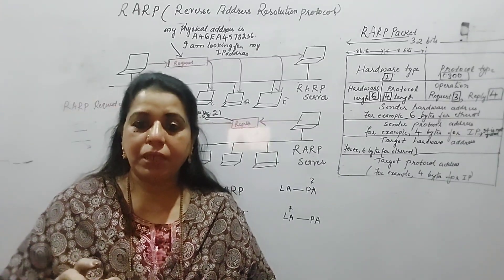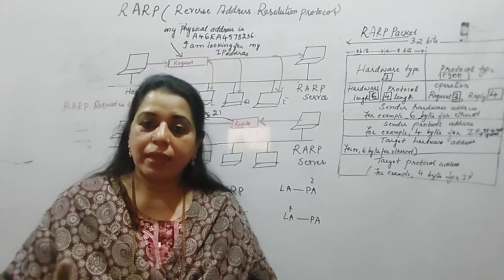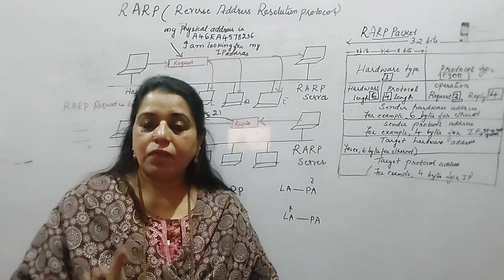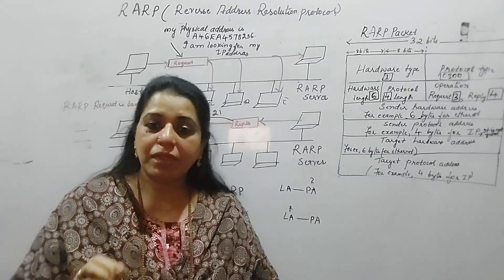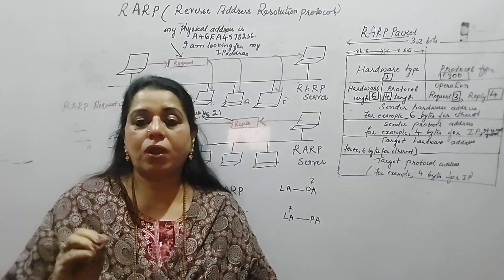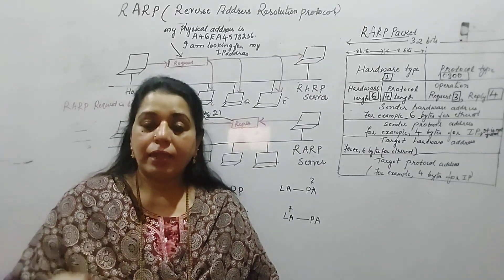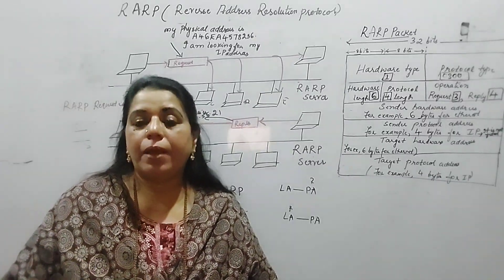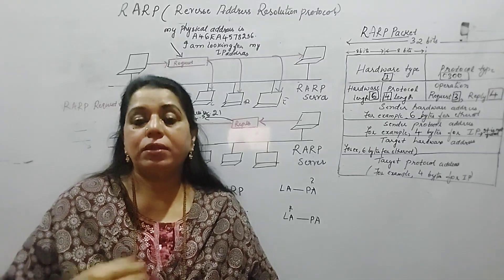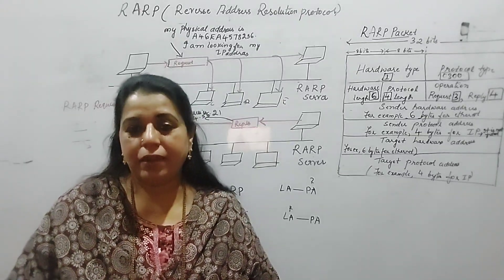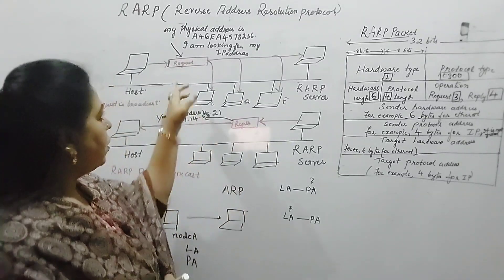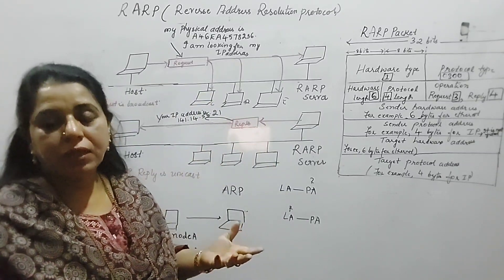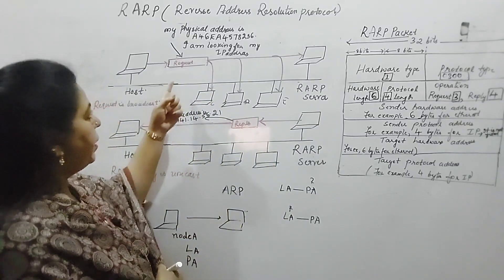Normally in every machine, the logical address and the corresponding physical address mapping information is stored. But if the machine is a diskless machine, it does not store this information. At that point of time, the node has to make use of the RARP protocol in order to get its own logical address. So it makes a RARP request in the network to find out its own logical address.